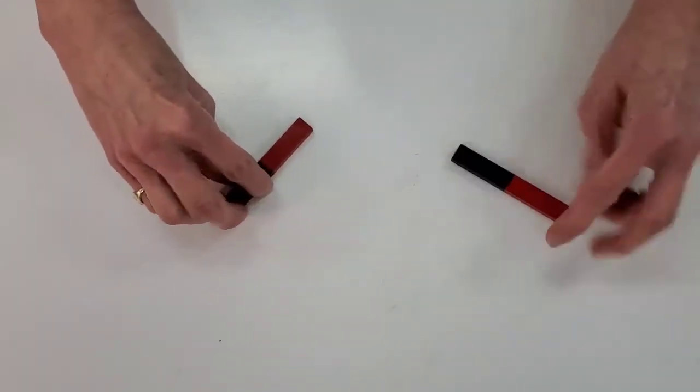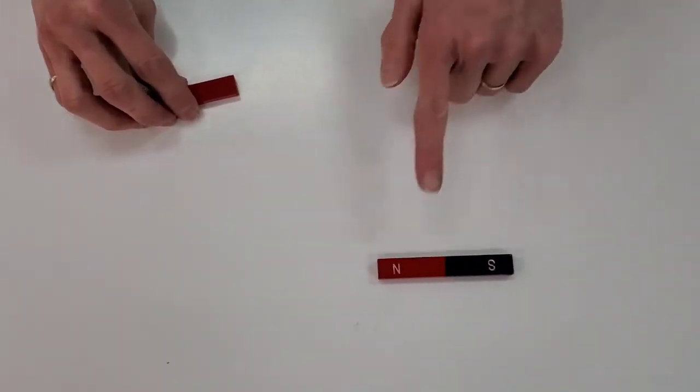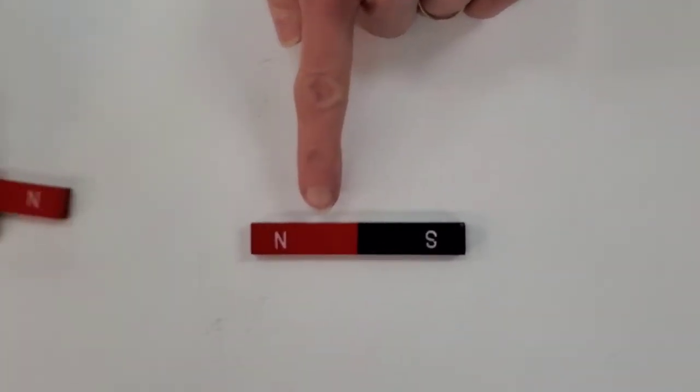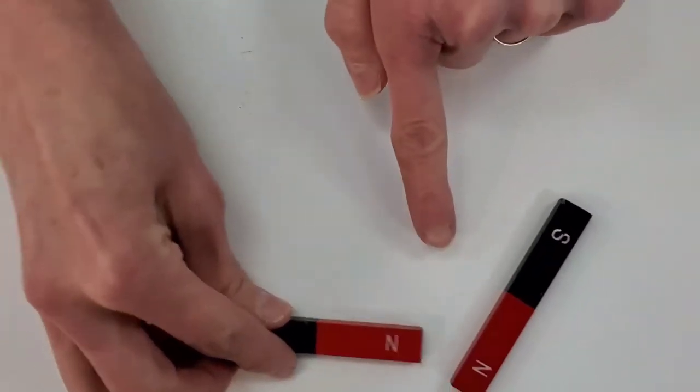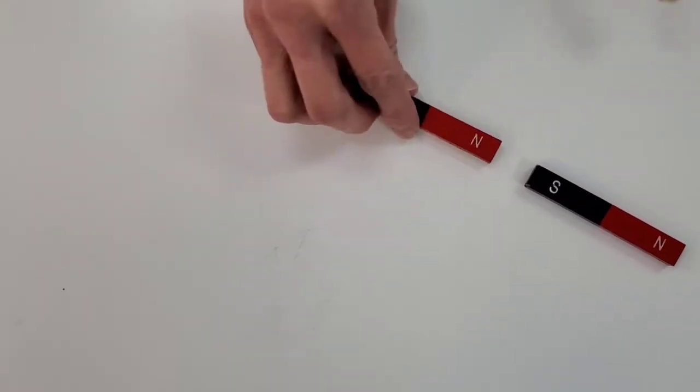The magnets have two poles, north and south. Like or similar poles repel each other, while opposite poles will attract.